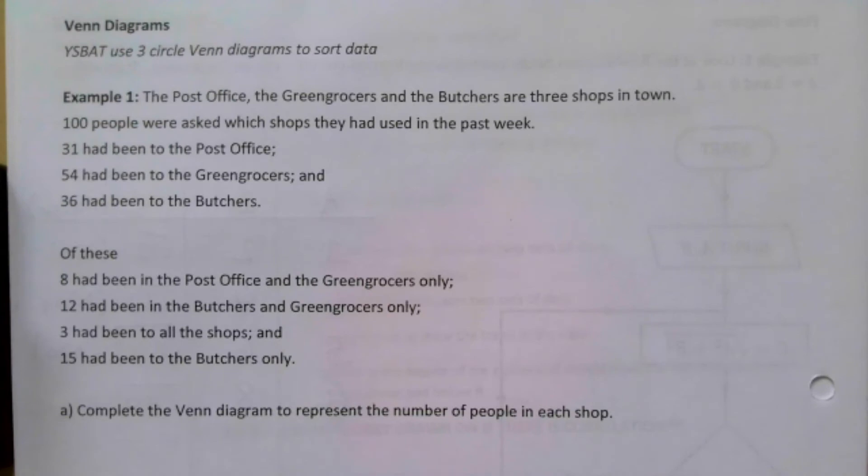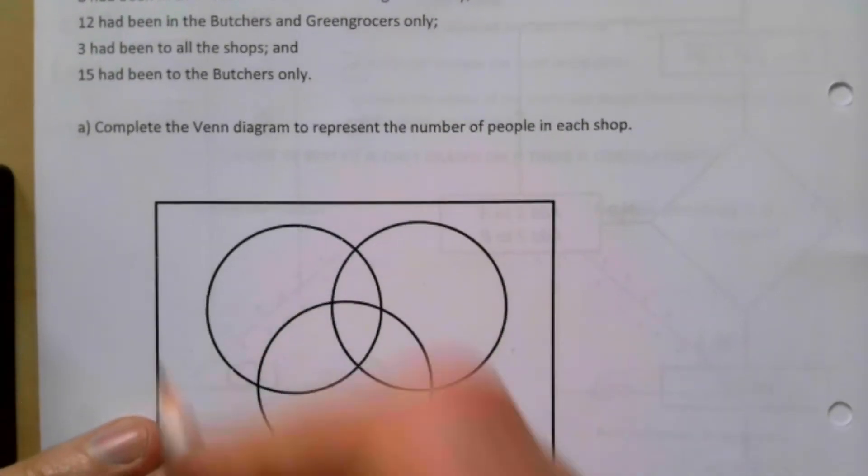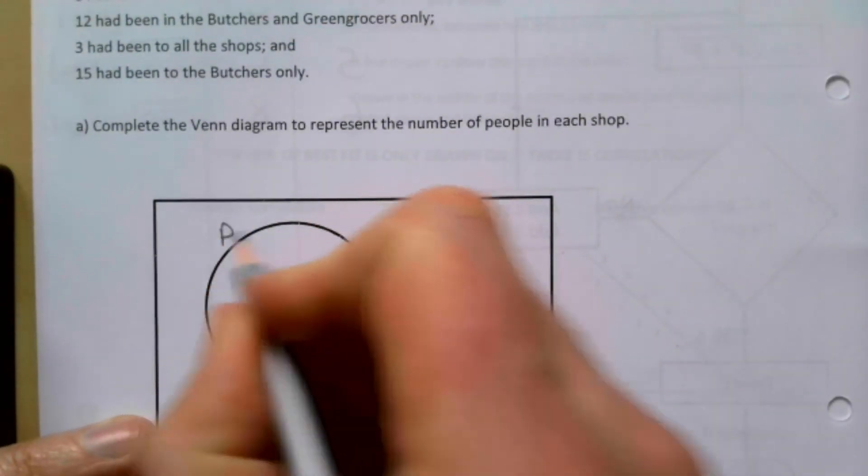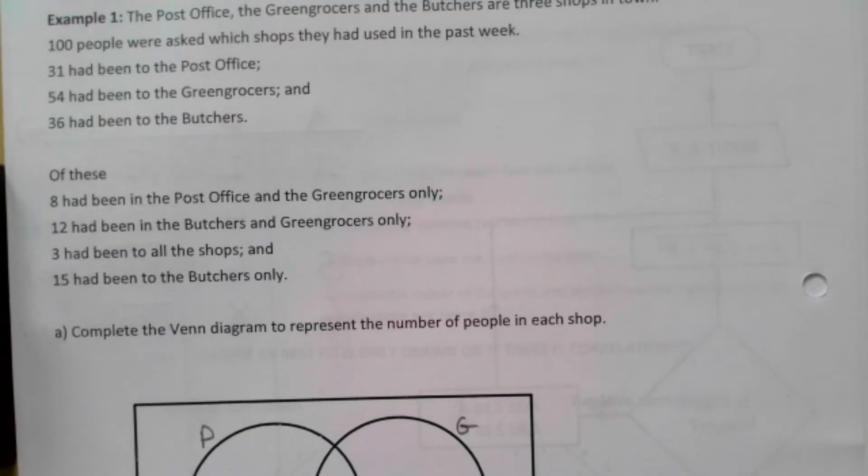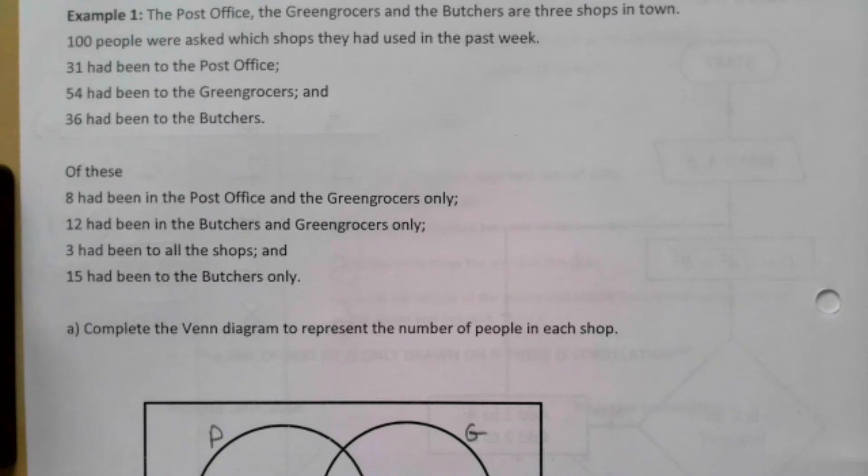The Post Office, the Greengrocers and the Butchers are going to be my three circles here. So we have Post Office, Greengrocers and Butchers, all three shops in the town. A hundred people are asked which shops they used in the past.